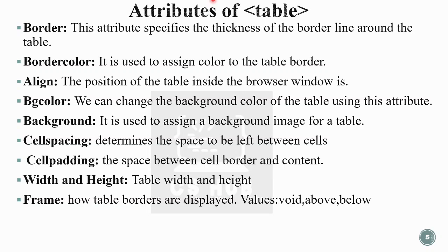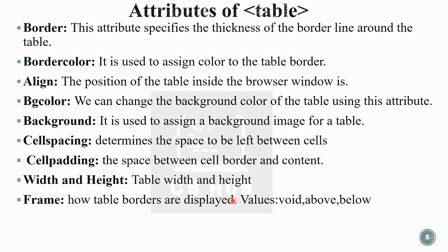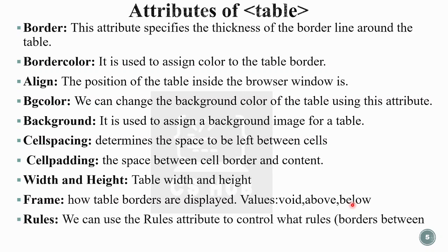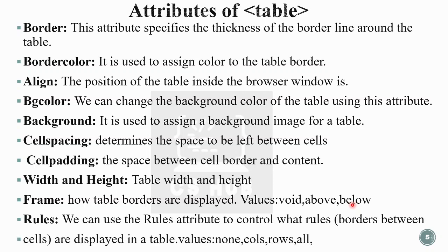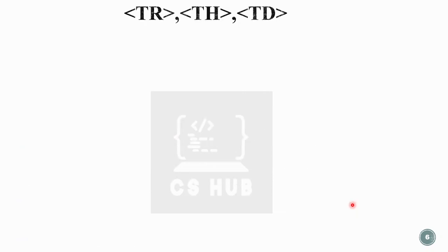The frame attribute controls how table borders are displayed. Values include void, above, and below. Using void hides all outer table borders; above displays only the top border; below displays only the bottom border. The rules attribute controls what rules are displayed between cells — like a grid structure. Values are: none (no rules between cells), cols (column rules only), rows (row rules only), and all (rules for all cells).